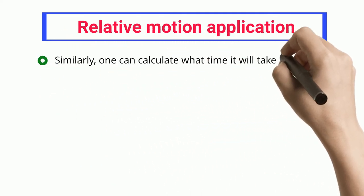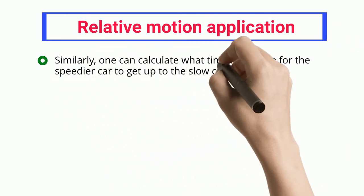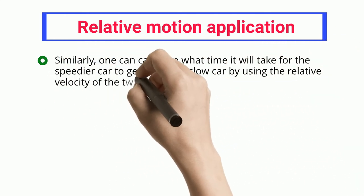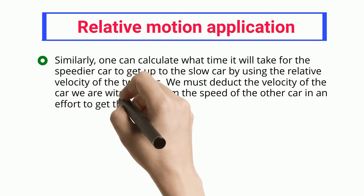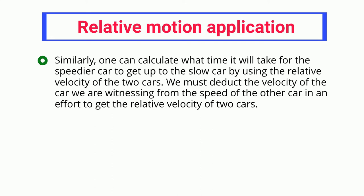Similarly, one can calculate what time it will take for the speedier car to get up to the slow car by using the relative velocity of the two cars. We must deduct the velocity of the car we are witnessing from the speed of the other car in an effort to get the relative velocity of two cars.